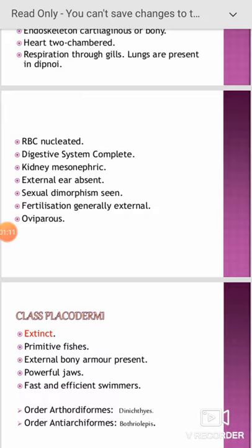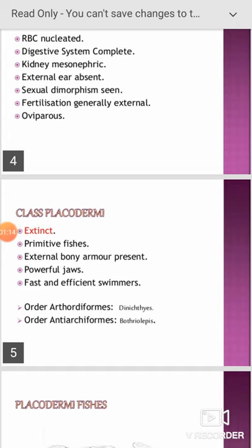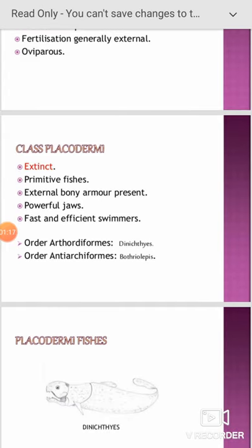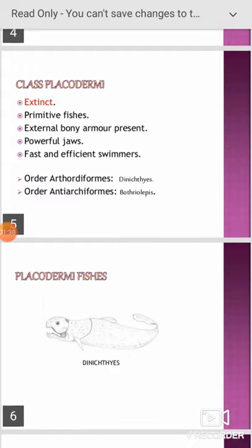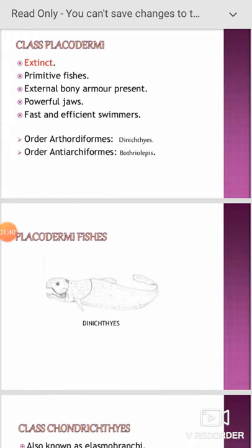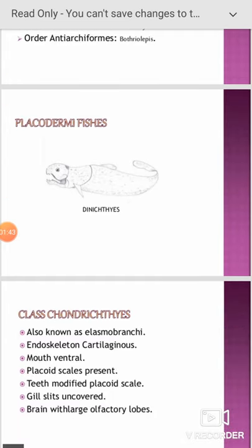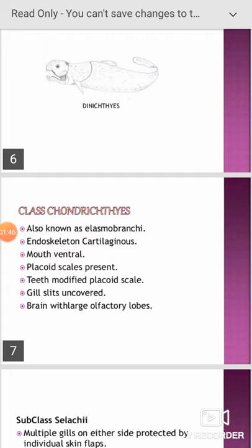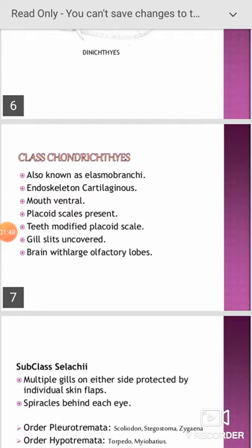The first class, Placodermi, includes the extinct group of primitive fishes where the body is covered by bony armor and jaws are powerful. They are efficient swimmers, divisible into two orders: Arthrodira (Protoforma) and Antiarchiformis. Example: Dinichthys.